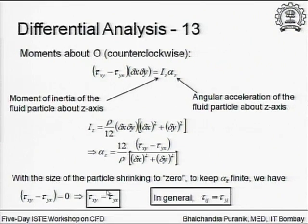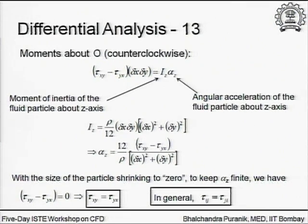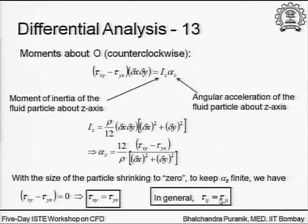The conclusion is that tau_xy = tau_yx, which is a very important simplification. There is physics involved: we cannot expect alpha_z to tend to infinity for no reason. In general, repeating this exercise for all planes (xy, yz, xz) gives tau_ij = tau_ji, where i and j independently take x, y, z. So tau_xy = tau_yx, tau_yz = tau_zy, and so on.